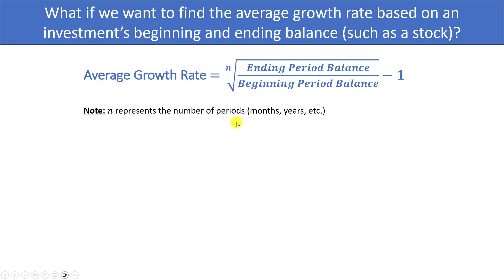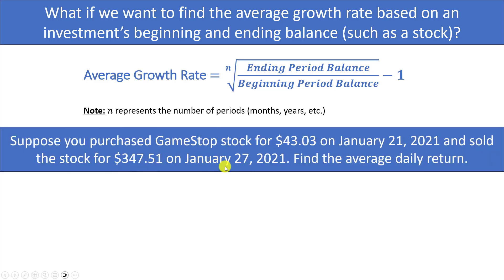Suppose that you purchased GameStop stock for $43.03 on January 21st 2021 and sold the stock for $347.51 on January 27th 2021. Find the average daily return. You may or may not be familiar with the background related to this example, but basically in early 2021 a number of hedge funds were shorting the GameStop stock because they believed that they were gonna go out of business. A lot of people on reddit formed together and they said let's just buy as much GameStop stock as we can, and as you can see it went up massively in this one week period, all the way from $43 up to over $347.